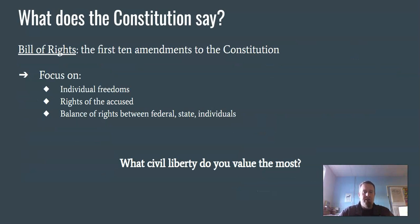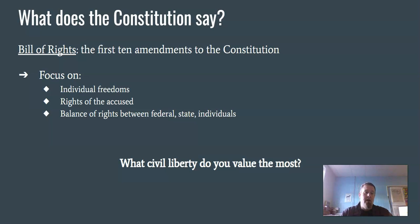The Bill of Rights is the first 10 amendments to the Constitution, and they tend to focus on individual freedoms. Amendments 5 through 8 are all about your rights of the accused — so when you're accused of a crime, certain rights kick in: the right to remain silent, the right to a jury trial, the right not to be tried for the same crime twice. We developed these because those rights were violated pretty frequently.